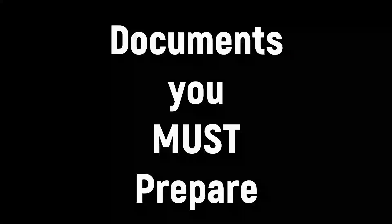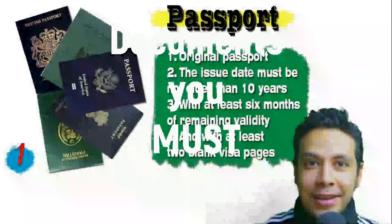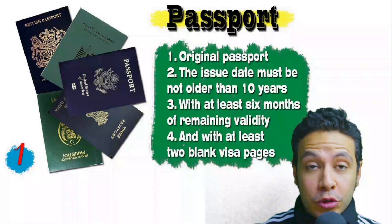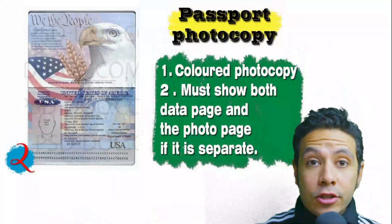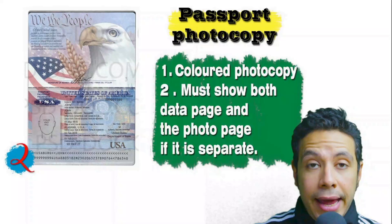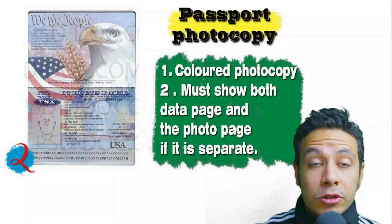What are the travel documents you need to prepare before applying for the visa? Speaking about your passport: it must be original, not older than 10 years, with at least six months of remaining validity and at least two blank visa pages for stamps. In many cases you will also need a passport photocopy — preferably colored — showing both the data page and photo page. In some cases you might be required to photocopy every single page of your passport.